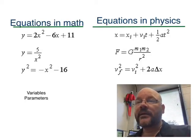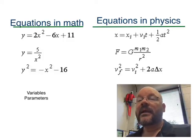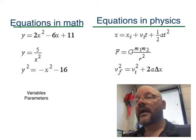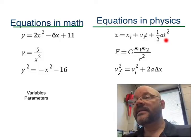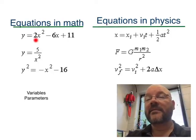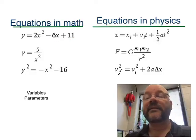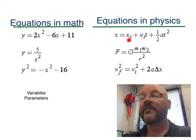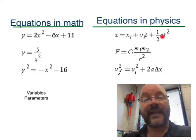Now take a look at what are, to a physicist, the same equations. This first one has x squared and x. Over here, once you see it, there's a t squared and there's a t. So both of these are quadratic equations — polynomials of order 2. In the first case our parameters are 2, negative 6, and 11. In the second case they're a little bit different: x sub i, v sub i, one half, and a.